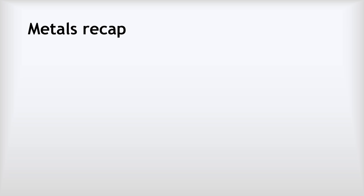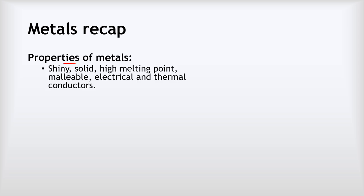Let's quickly recap our knowledge of metals. In terms of their properties — remember properties is the scientific word for characteristics — metals are all shiny, they're nearly all solid at room temperature except for mercury which is liquid. They have high melting points typically in the high hundreds to thousands of degrees Celsius, although a few melt at much lower temperatures. They are malleable, which means if you bend or hit them they will bend rather than snapping or shattering.